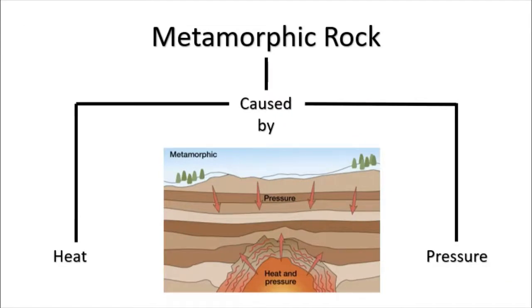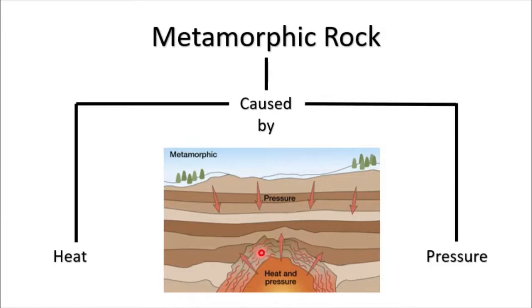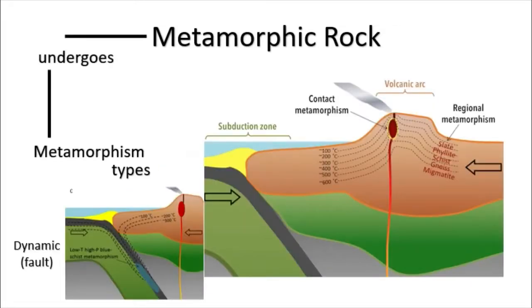Finally, we have metamorphic rock. Metamorphic rock is usually caused by heat and pressure. In the illustration, the source of heat is the magma from underground, and at the same time there is the pressure of the surface layers of the crust. In areas very near to magma, there will be a change in chemical compositions and the arrangement of crystals of materials and minerals to create another type of rock called a metamorphic rock. The process is called metamorphism.